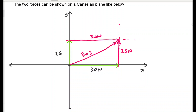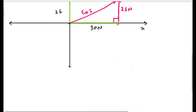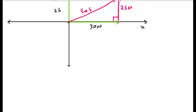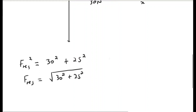We note that this gives us a right-angle triangle, because the angle between the two component force lines is 90 degrees. To calculate the magnitude of the resulting force, we apply the theorem of Pythagoras: F-res squared equals 30 squared plus 25 squared. To get the magnitude of F-res, we take the square root of both sides.